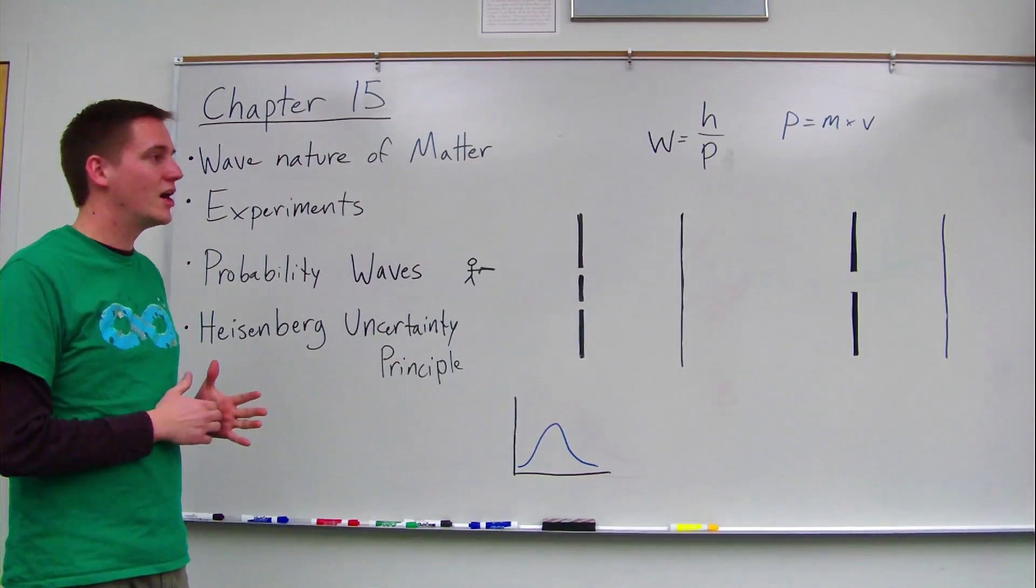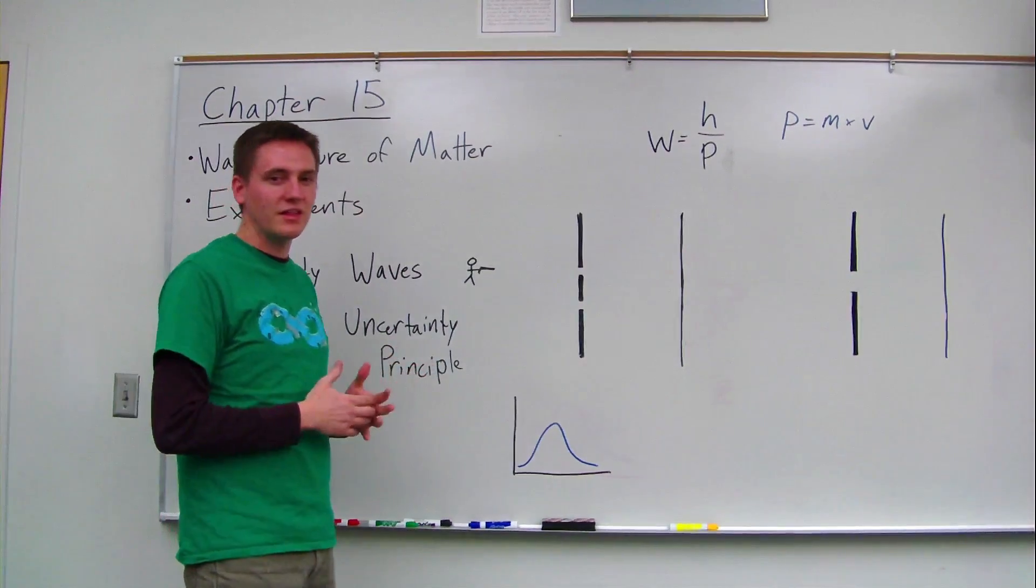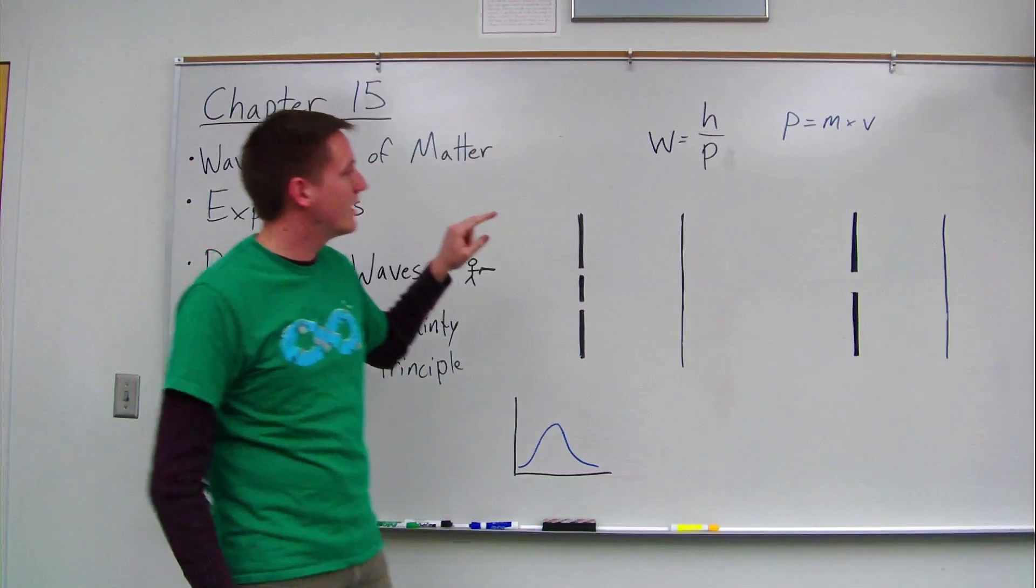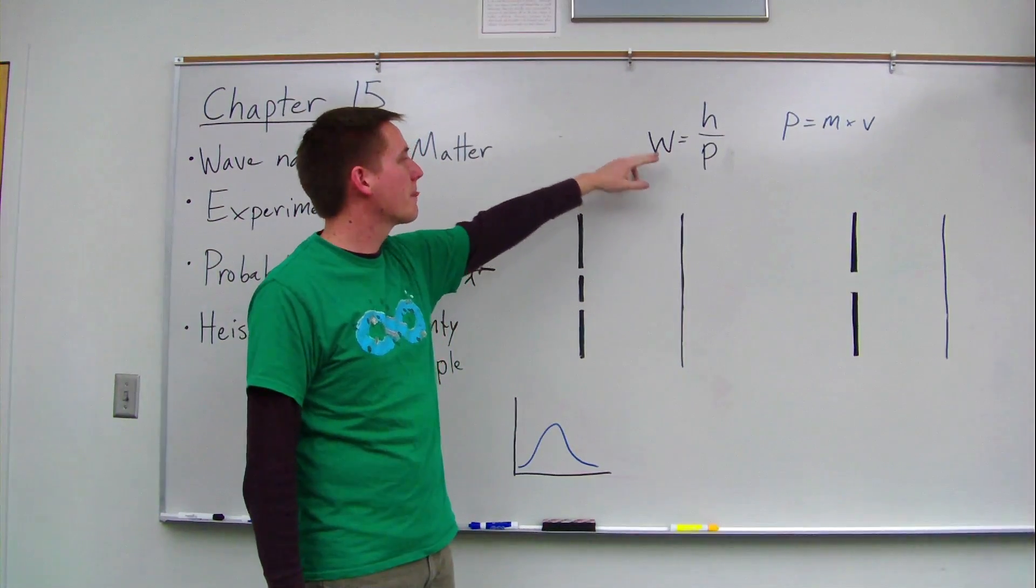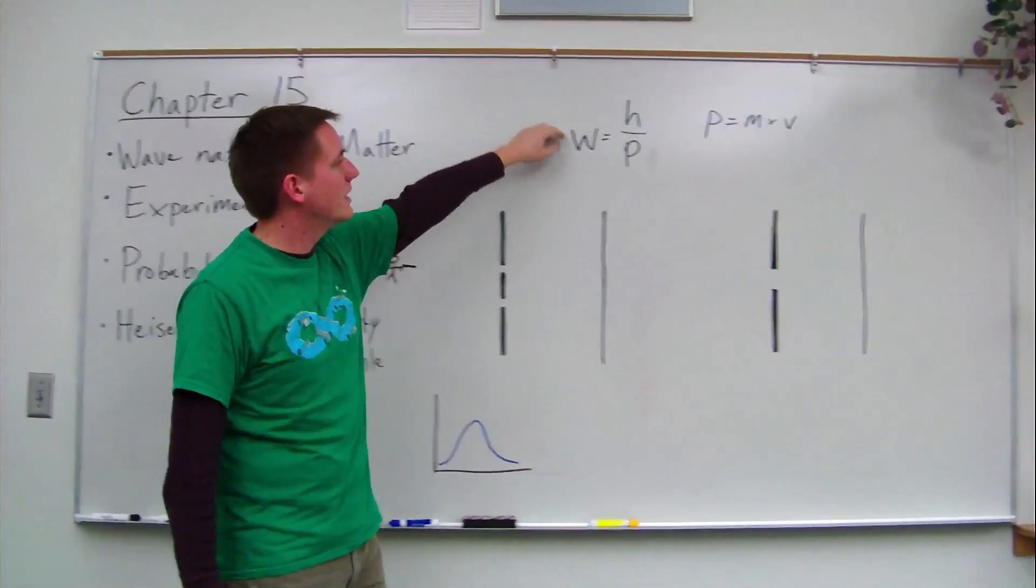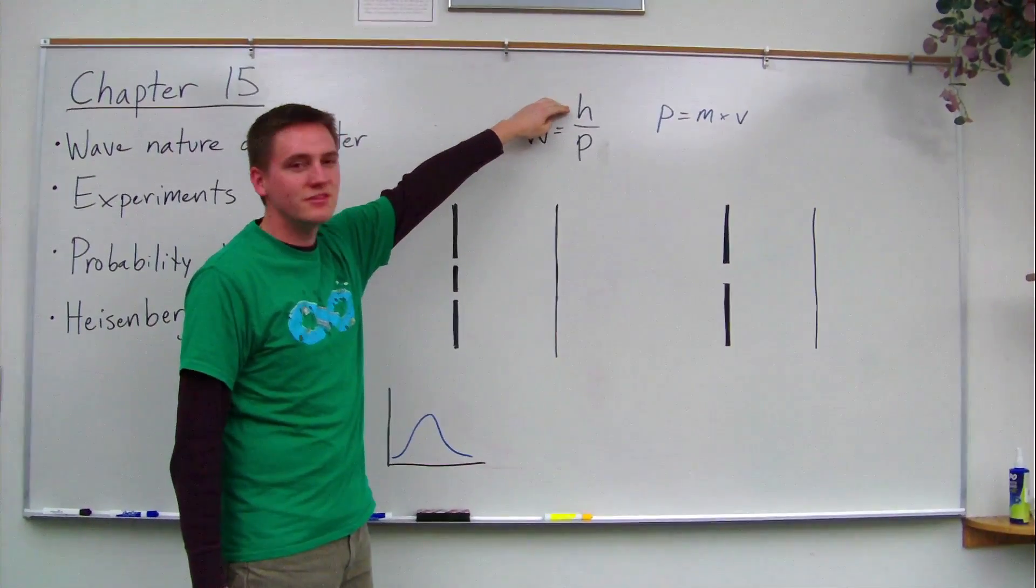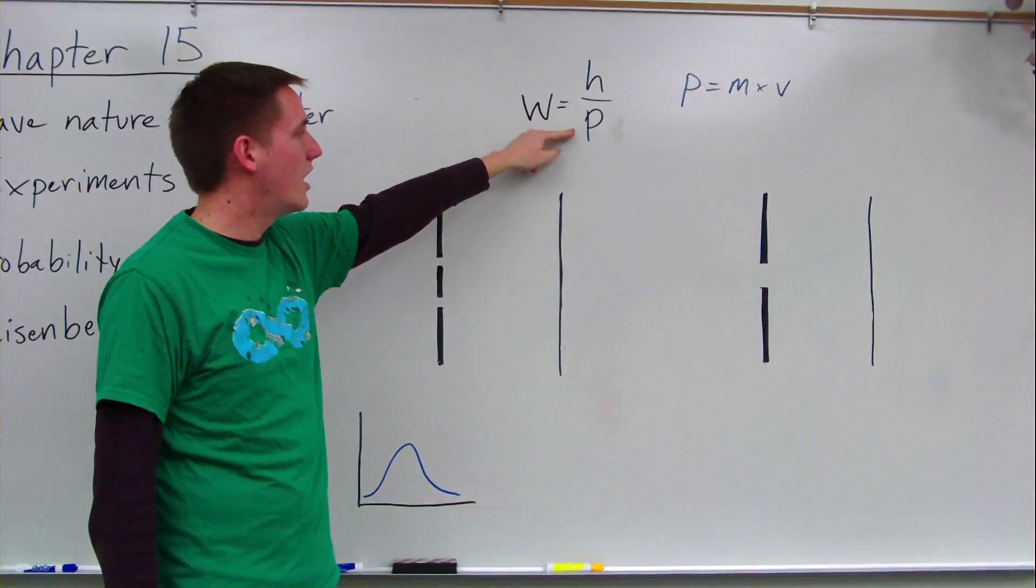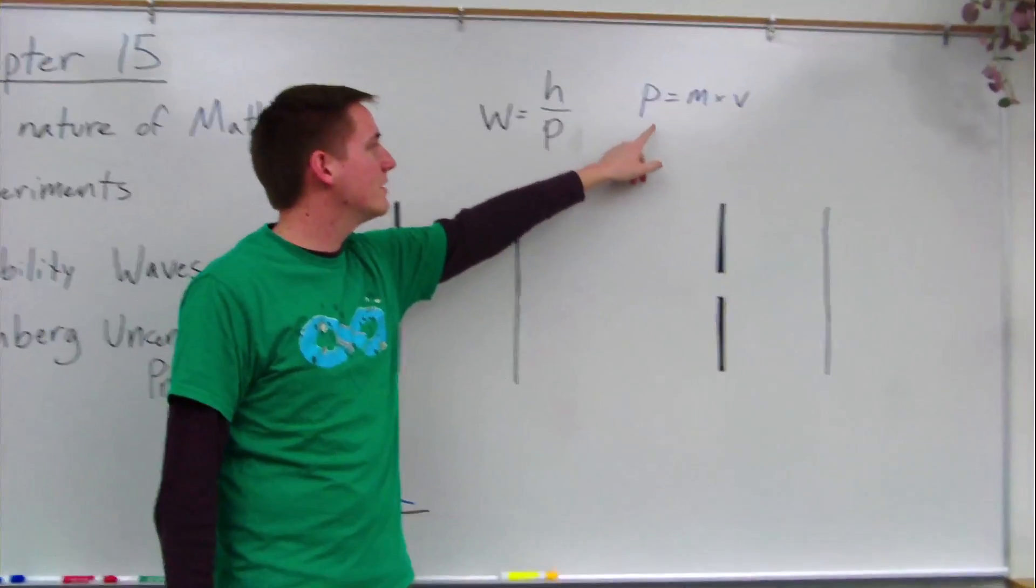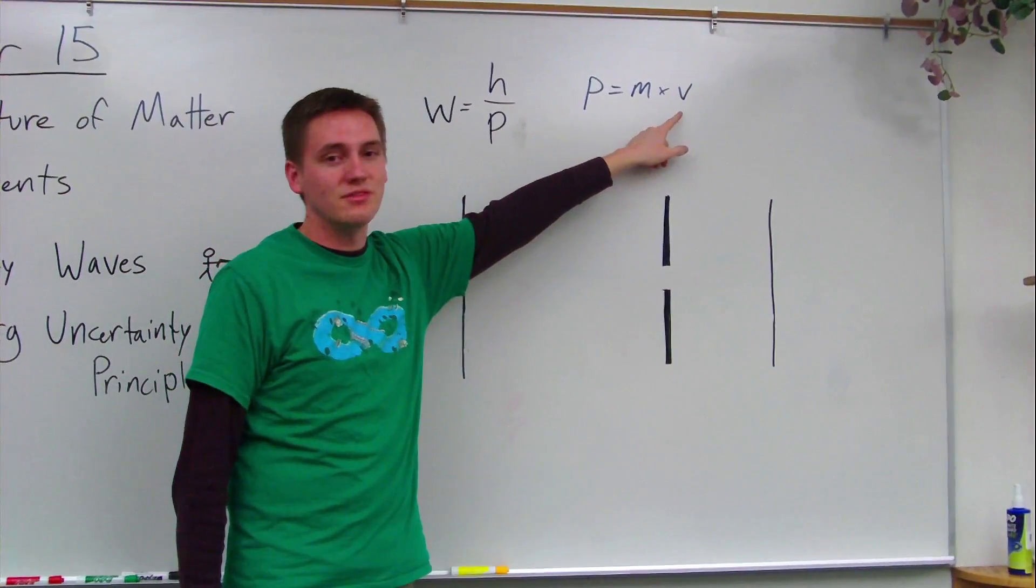A property of waves is wavelength. They discovered a way to calculate the wavelength of matter using this formula. The wavelength of matter equals Planck's constant, which is a very small number, divided by the momentum of an object. Remember that momentum equals mass times the velocity.